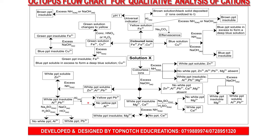You can also add aqueous potassium iodide to differentiate. Lead iodide occurs as a yellow solid, so if you add aqueous potassium iodide to a solution containing lead, you get a yellow precipitate — lead is present. If there is no yellow precipitate, lead is absent, therefore aluminum is present. That completes the analysis of ZAP.